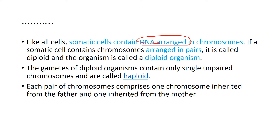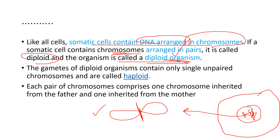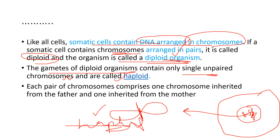Like all cells, somatic cells also contain DNA arranged in chromosomes. If the somatic cells contain chromosomes arranged in pairs, it is called diploid and the organism is called a diploid organism. Imagine a cell with a nucleus and a chromatin network — if the chromosomes occur in pairs, it is diploid. In some cases, only one arm of the chromosome is present, and that condition is called haploid. Haploid is mainly seen in the gametes of the diploid organism, containing only one single unpaired chromosome.